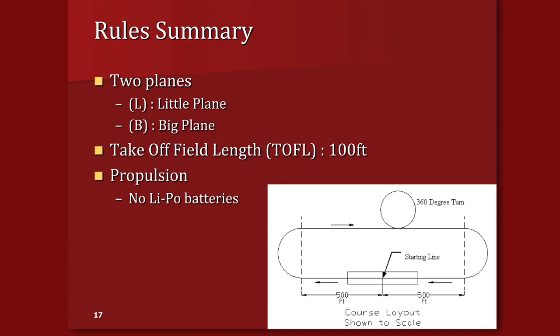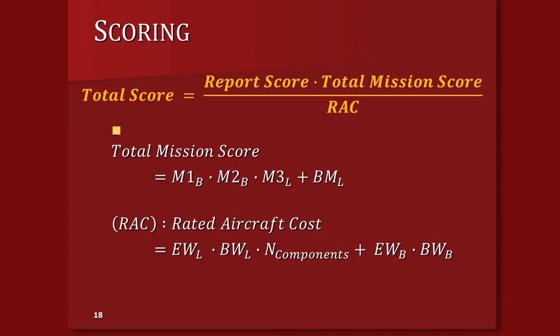In summary: two planes — a little plane and a big plane. We were limited to a takeoff field length of 100 feet, which sounds like a lot but really isn't. On propulsion, a constant throughout every year in the contest is that we can't use LiPo batteries.